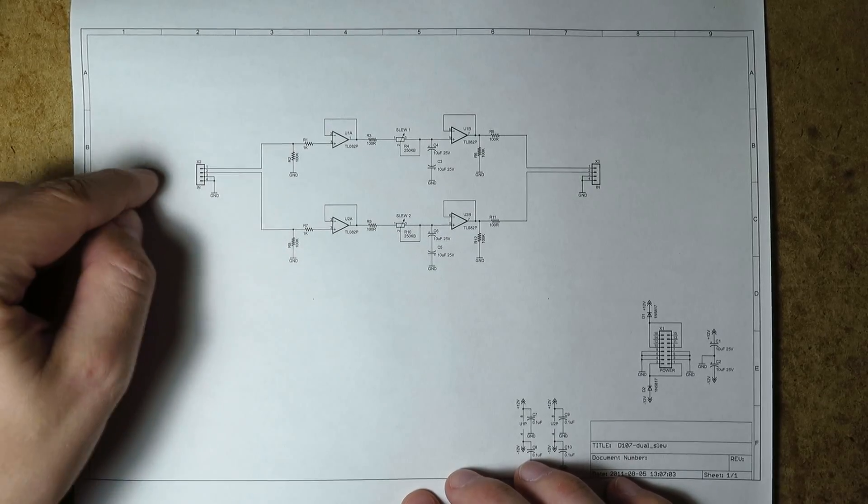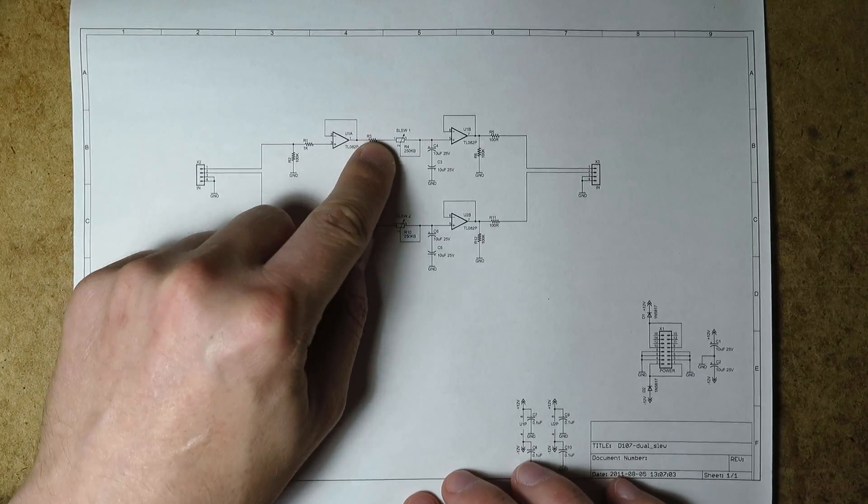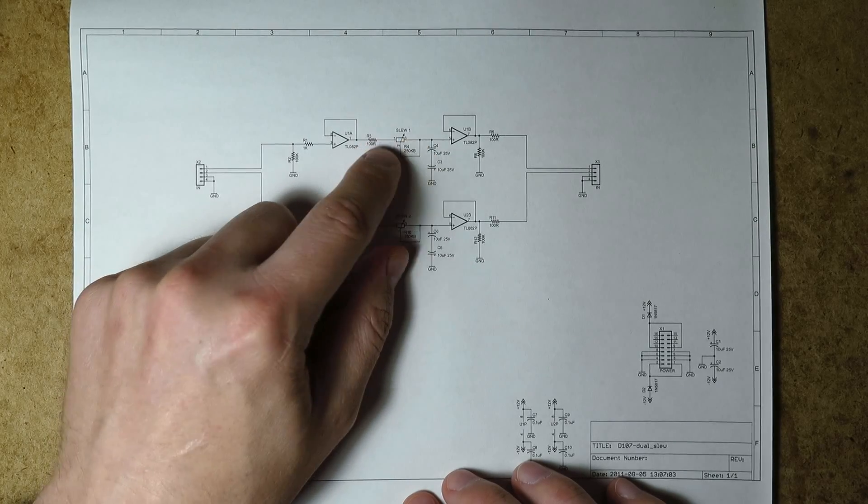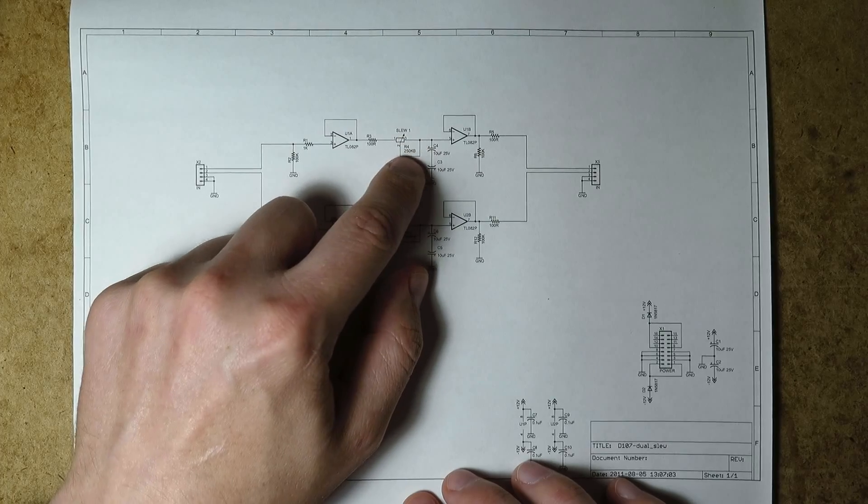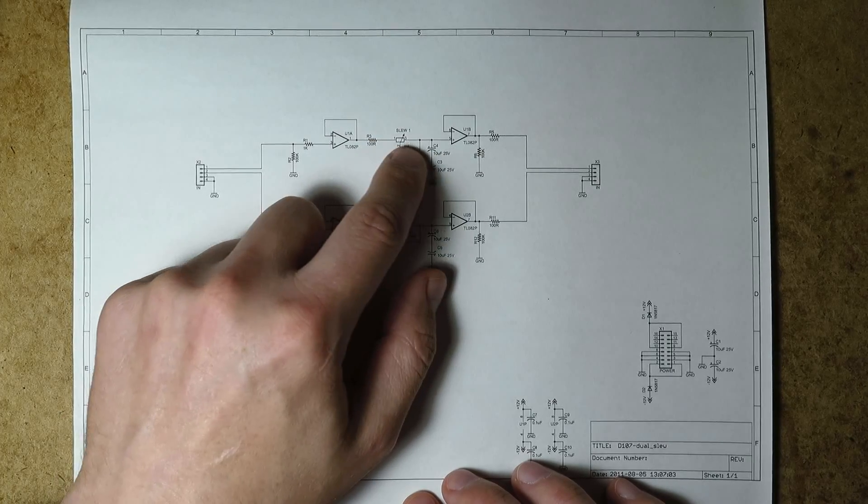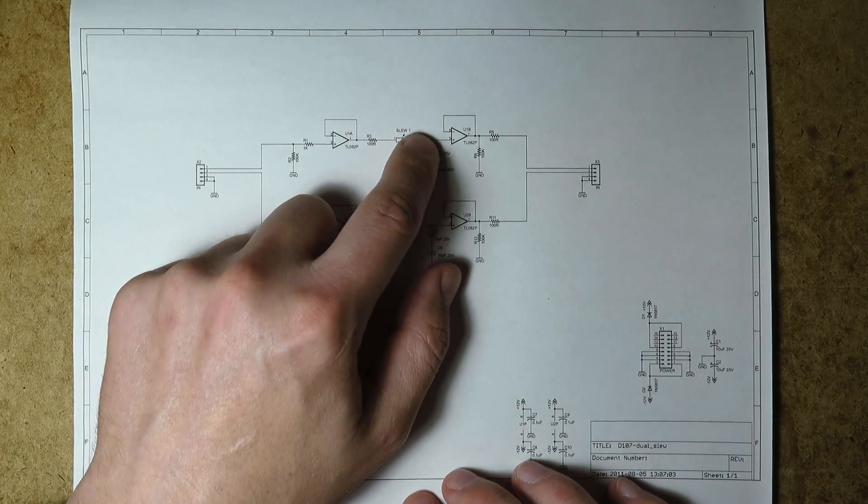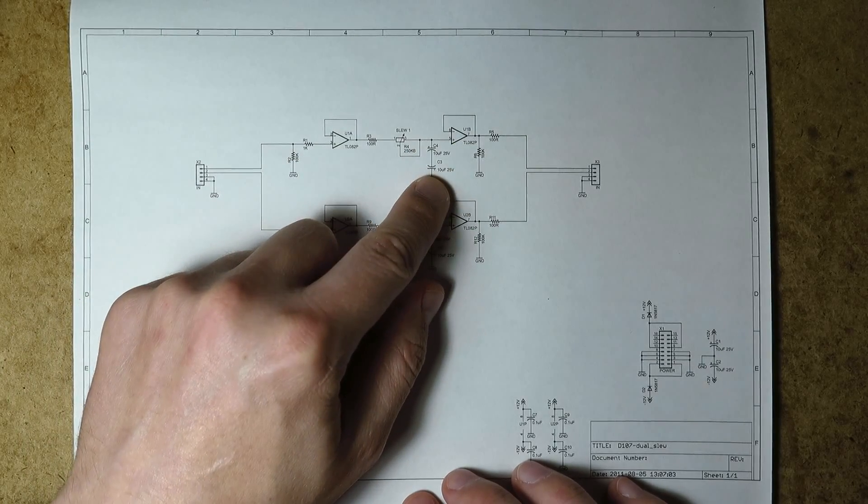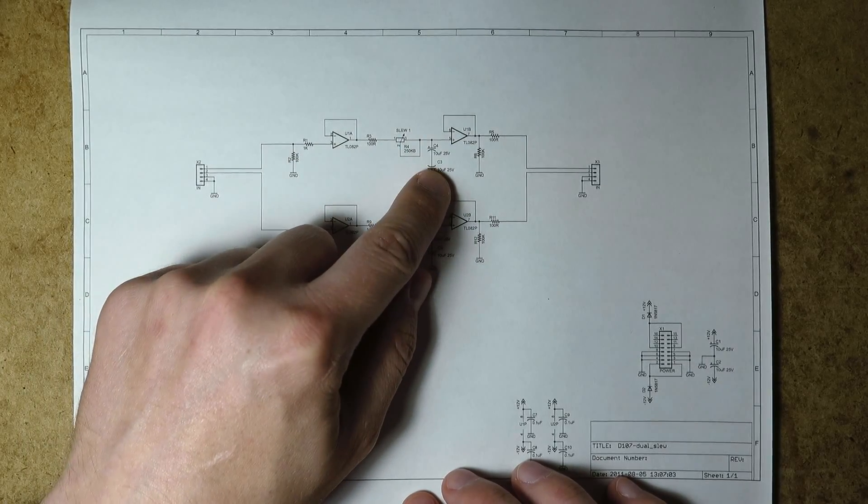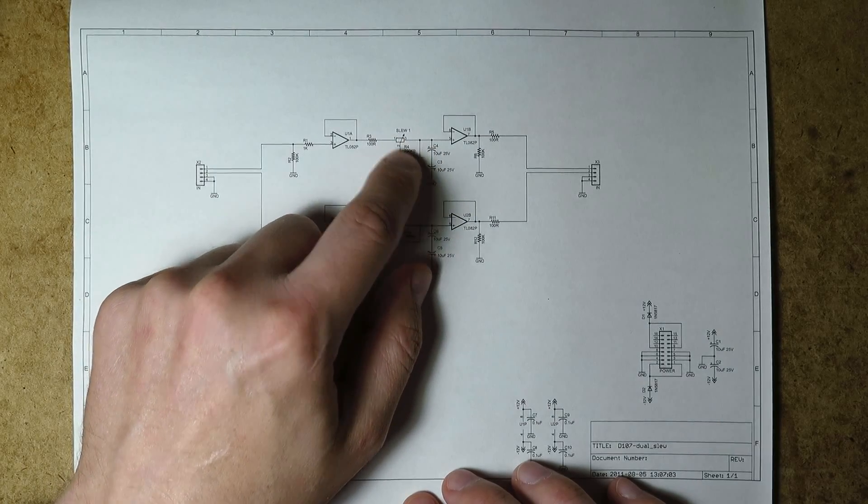So what happens here is no matter what signal you put in, you're going to get a strong output from here which is going to go through this variable resistor and charge this capacitor. This is set up like just a single variable resistance. Notice that the wiper is tied back to one side.